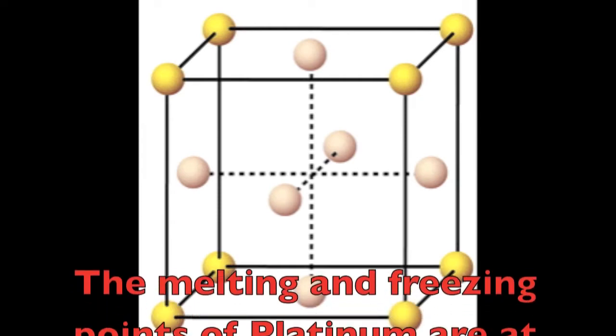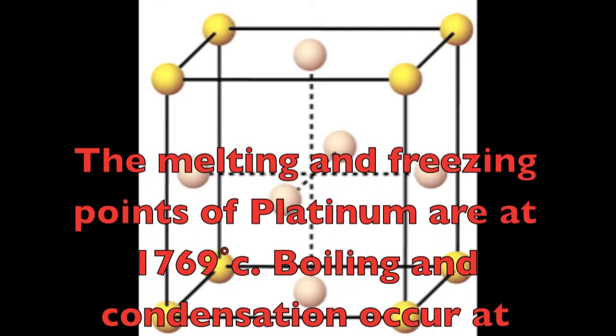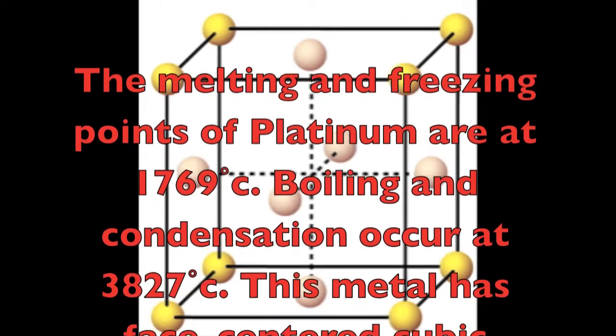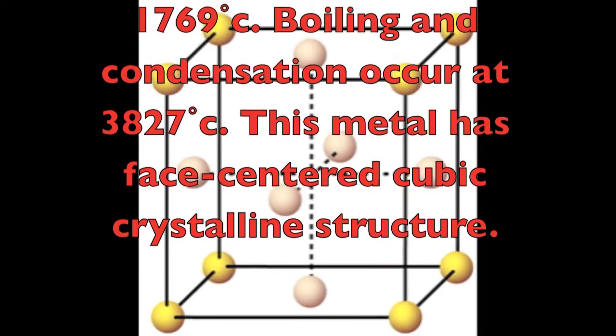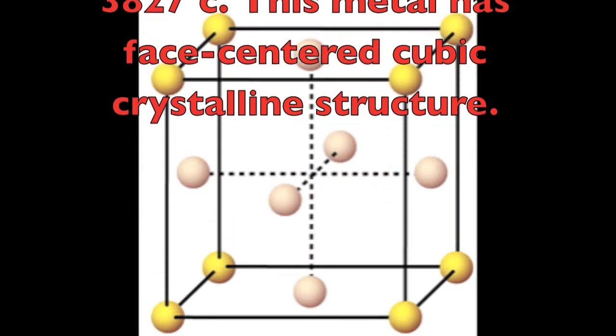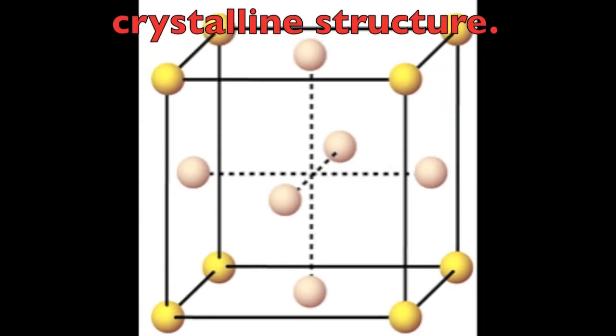The melting and freezing points of platinum are at 1,769 degrees Celsius. Boiling and condensation occur at 3,827 degrees Celsius. This metal has a face-centered cubic crystalline structure.